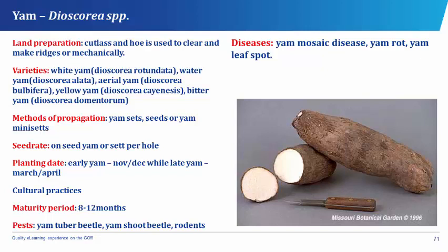Yellow yam is planted around November to December, while late yam is planted around March to April. Yam's cultural practices include mulching, regular weeding, application of fertilizer, and staking and training of vine. Mulching is the covering of the heaps or ridges with dry leaves to reduce soil temperature, conserve soil moisture, and prevent rotting of yam sets. Yam matures in 8 to 12 months.